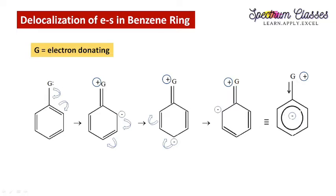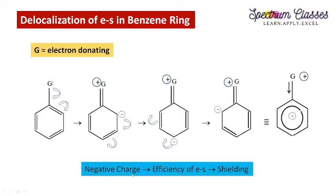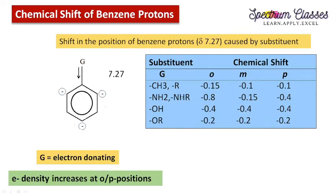Since the meta position is electron deficient compared to ortho and para when the group is electron donating, the meta position will resonate at a higher delta shift value. At positions with negative charge, there is an excess of electrons. These electrons shield the proton from the applied external magnetic field. If a proton is shielded, it experiences a lesser magnetic field and therefore resonates at a lower delta value.